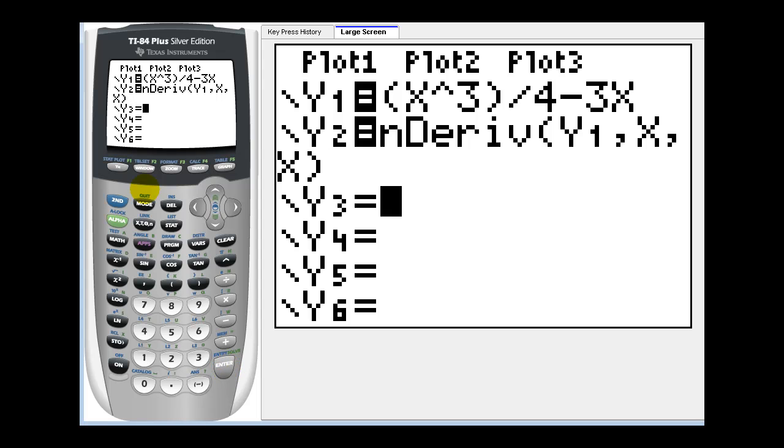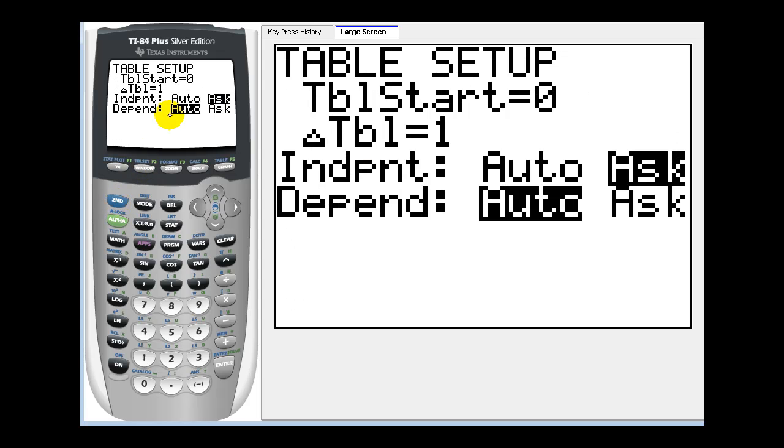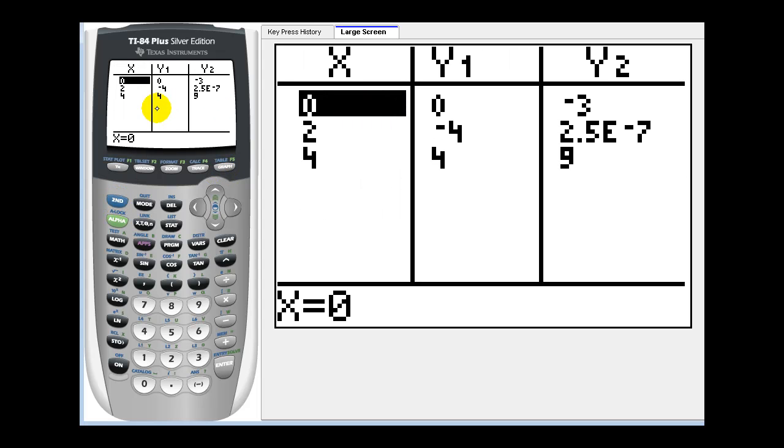Now if we go to table set for a moment, second window, make sure that we have our independent variable on ask. And then go to the table, press second graph. Now we can type in any value of x we want, and Y1 is the function value, and Y2 would be the derivative function value.